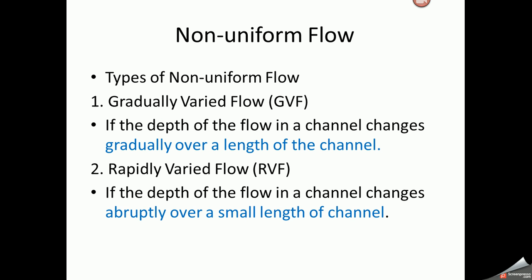We further classify non-uniform flow into two types: gradually varied flow and rapidly varied flow. In gradually varied flow, the depth changes gradually over a long distance. In rapidly varied flow, the depth of flow in the channel changes abruptly over a small length of channel — it can suddenly change.